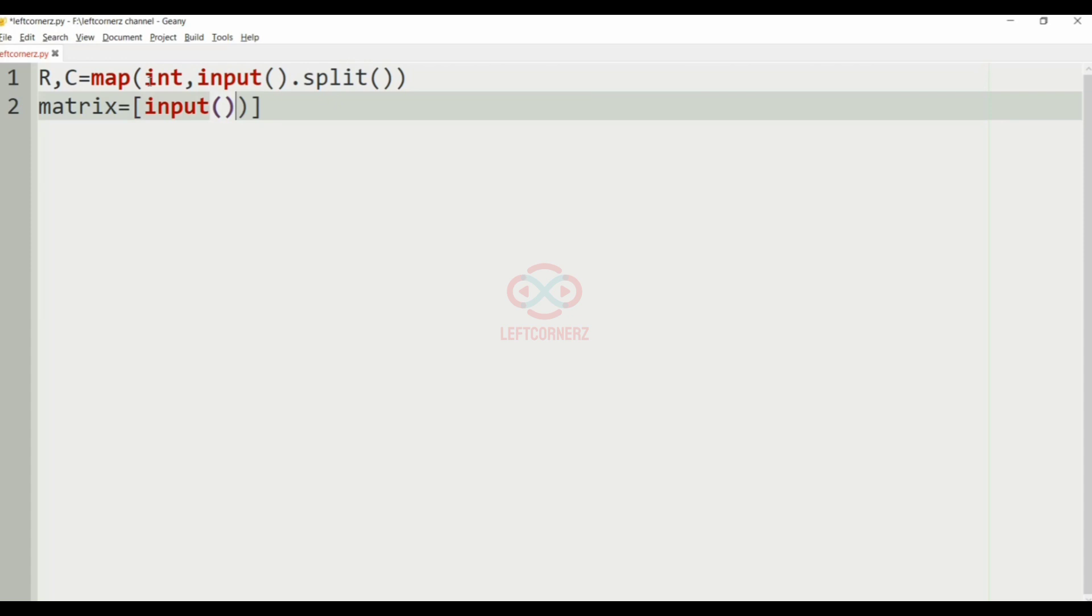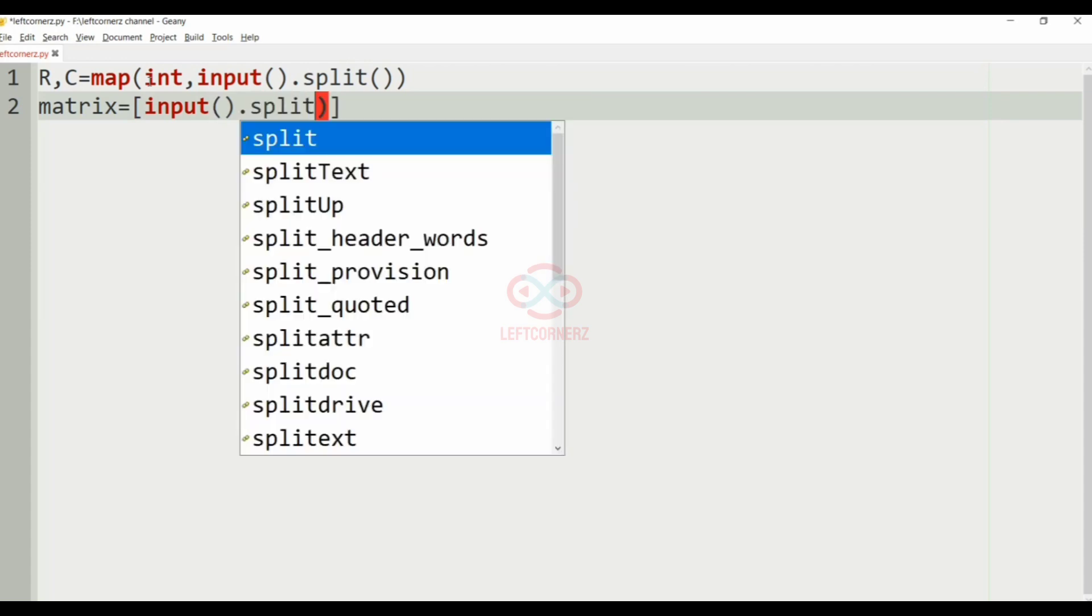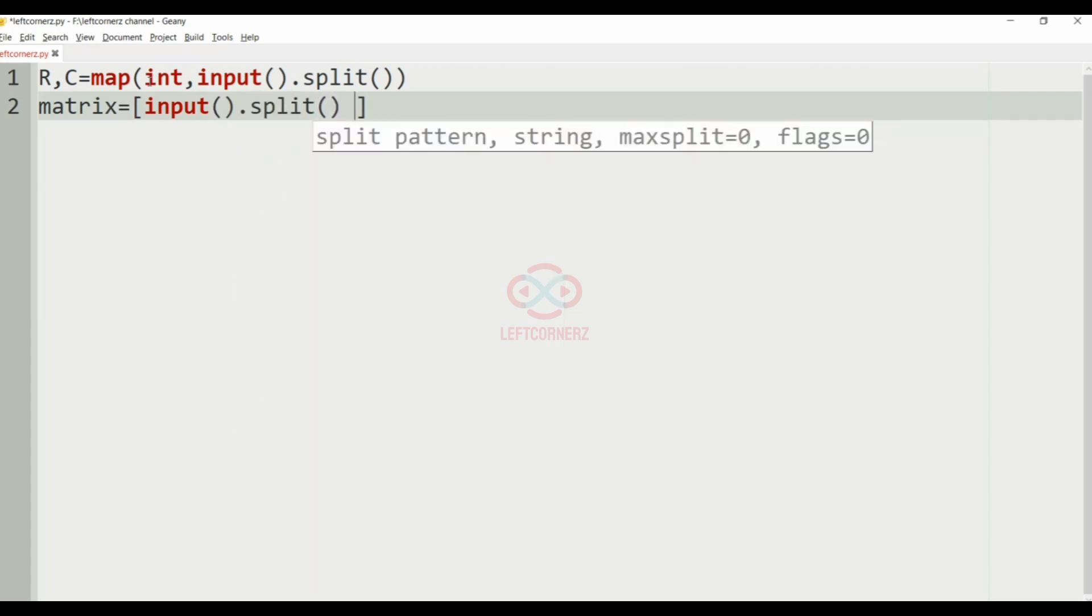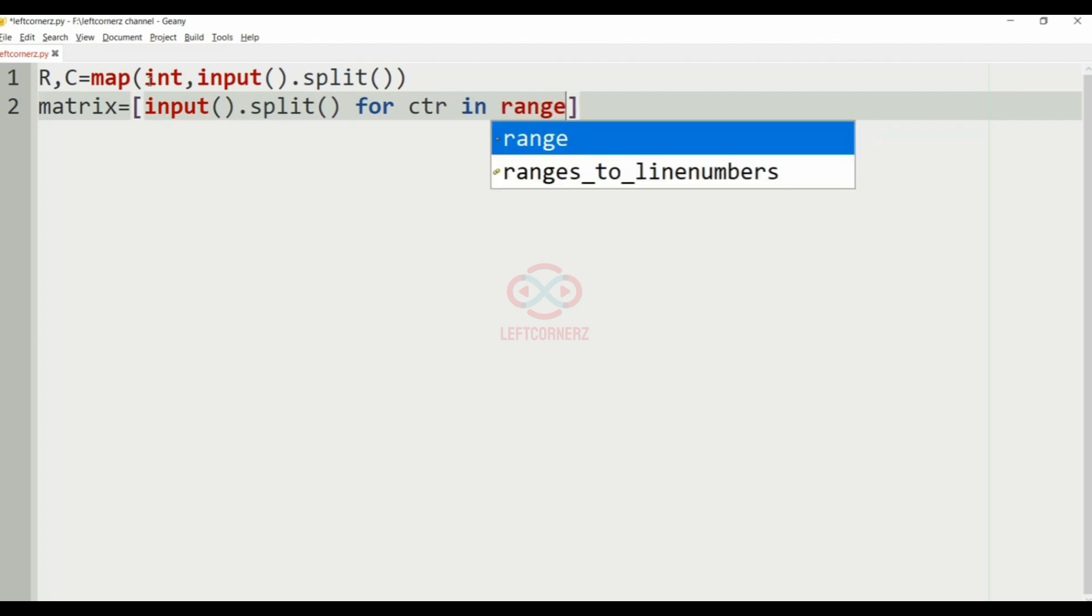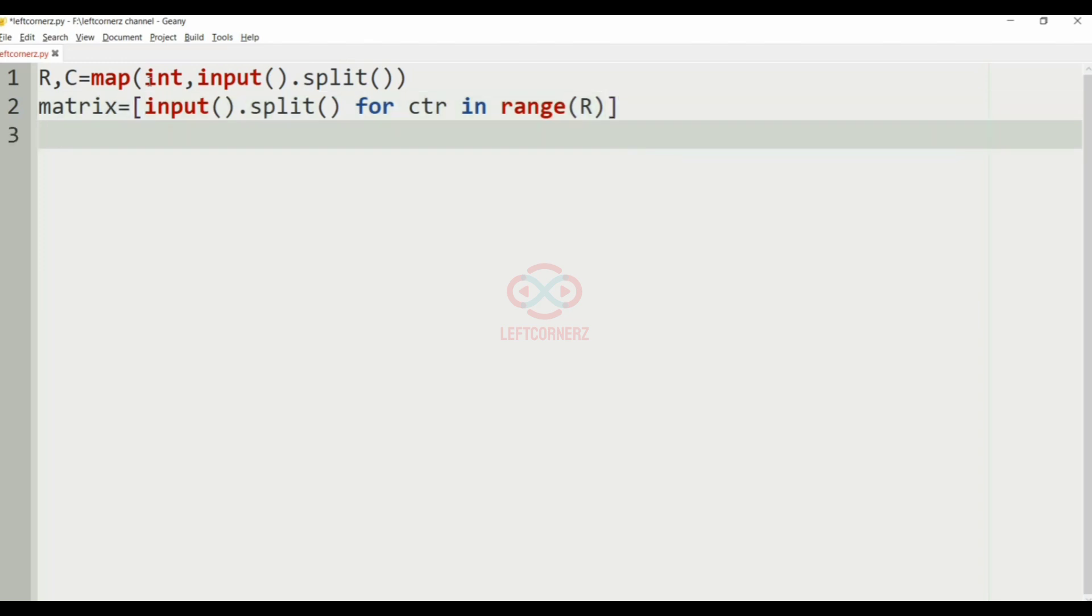Equal to input dot split for ctr in range R, and then we'll get X and Y denoting element from the matrix.